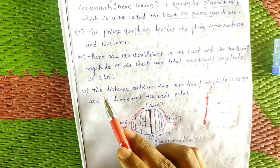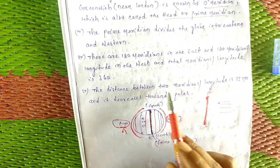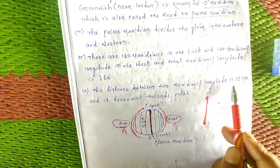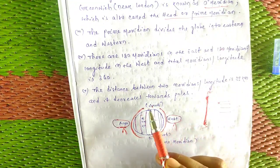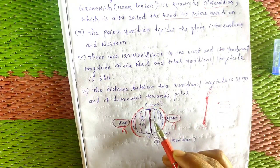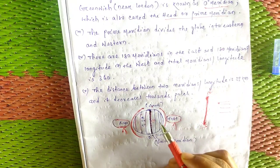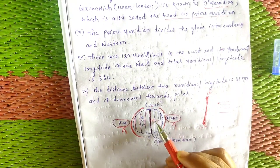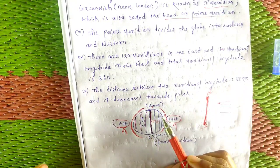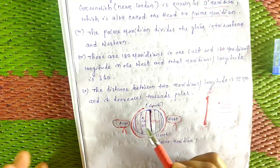The distance between two meridians is 111 kilometers at the equator.